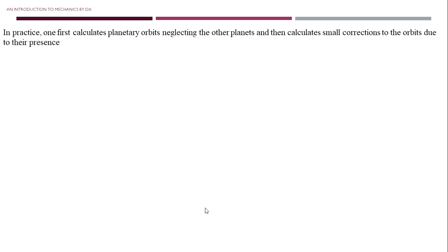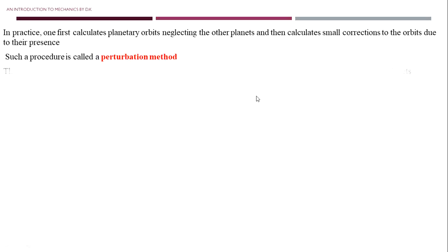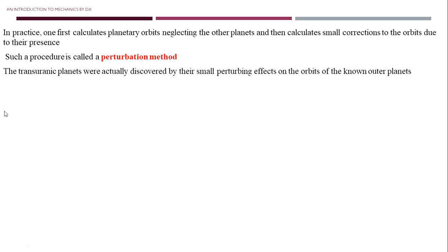In practice, one first calculates planetary orbits neglecting the other planets, and then calculates small corrections to the orbits. Such a procedure is called a perturbation method. The trans-Uranic planets were actually discovered by their small perturbing effect on the orbits of the known outer planets.